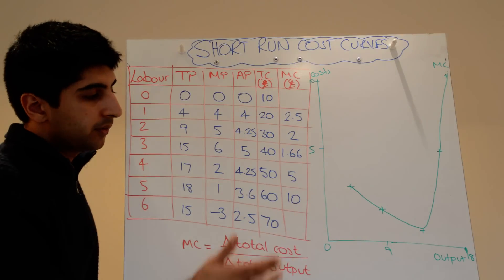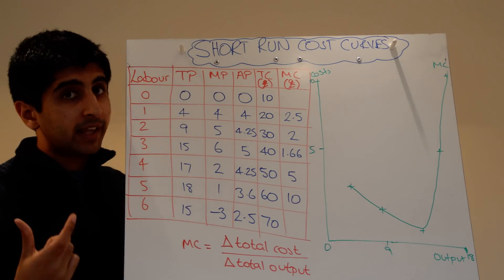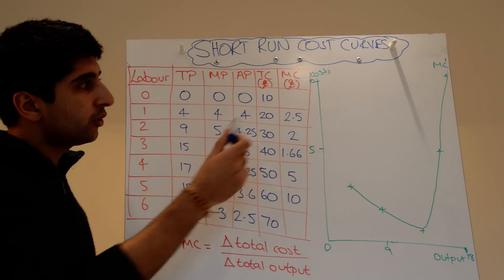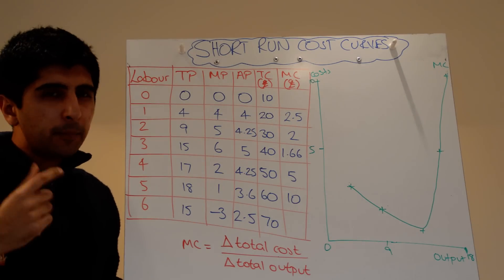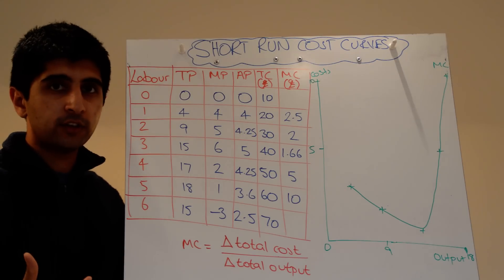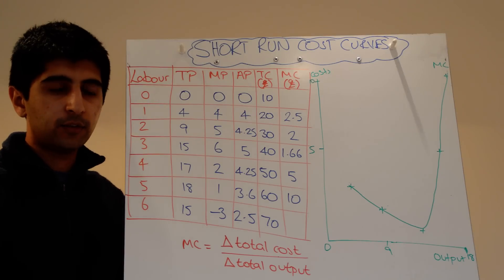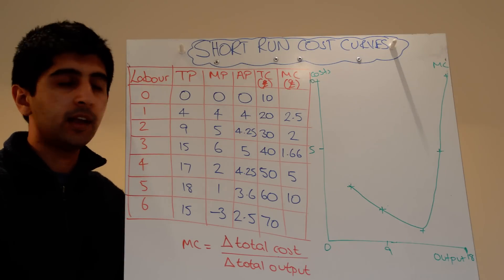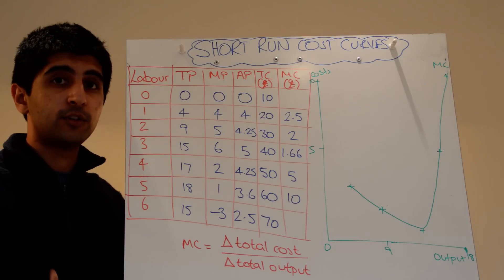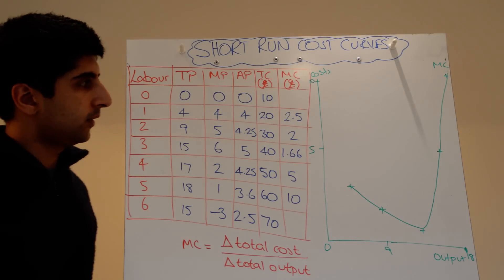Our marginal cost — we're using the word marginal again in exactly the same way as we did before. Our marginal cost is very simply how much extra does it cost us to produce another unit. So as we produce more and more units of something, how much extra is it costing us to produce those extra units? That's what the marginal cost tells us here.